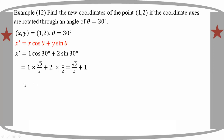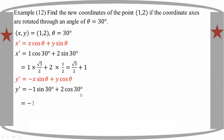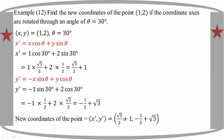1 prime equal to minus 8 sin theta plus 1 cos theta. 1 prime equal to minus 8 sin theta plus 1 cos theta. 1 minus 2 cos theta plus 3 minus 2. 2 prime equal to minus 1 minus 2 plus then theta plus 1. 1 prime equal to minus 1 minus 2. 1 prime equal to 0. 2 prime equal to 0.